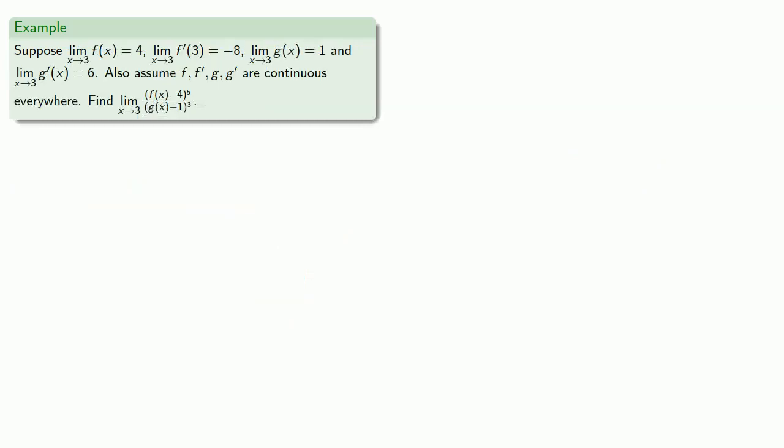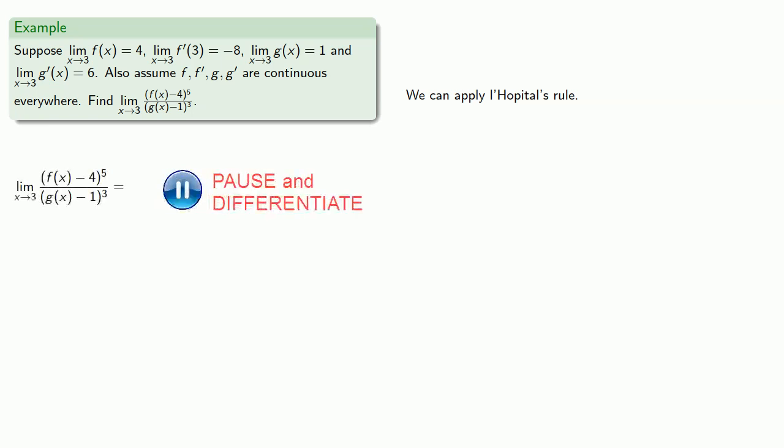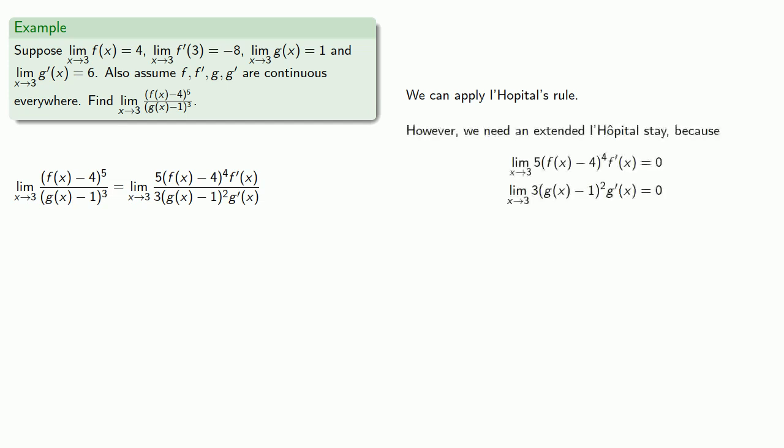Or let's take a look at another limit. So again, always check the admissions form. And we can apply L'Hopital's rule. However, we need an extended L'Hopital stay, because our numerator goes to 0 and our denominator also goes to 0. And again, differentiating again requires finding the second derivative, which we don't have.